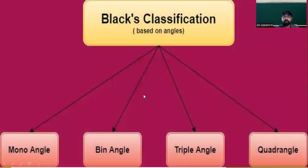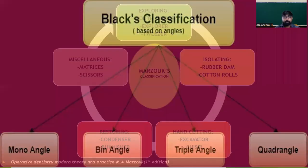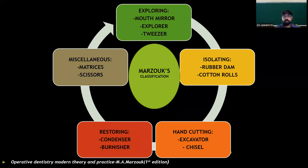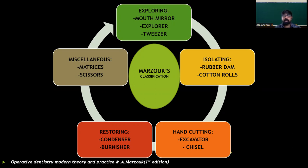GV Black also classified instruments based on angles into mono-angle, bin-angle, triple-angle, and quadrangle. Marzouk's classification divides instruments into exploring instruments, isolating instruments, hand cutting instruments, restoring instruments, and miscellaneous instruments. Exploring instruments include mouth mirror, explorer, and tweezer. Isolating instruments include rubber dam and cotton rolls. Hand cutting instruments include excavators and chisels. Restoring instruments include condenser and burnisher. Miscellaneous instruments include matrices and scissors.